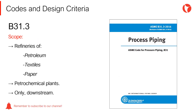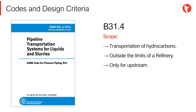The piping design code ASME B31-3 is applicable to the design of refineries — petroleum refineries, textiles, paper refineries — as well as petrochemical plants, and only for downstream plants. The piping design code ASME B31-4 is applicable to the transportation of hydrocarbons outside the limits of a refinery and upstream.